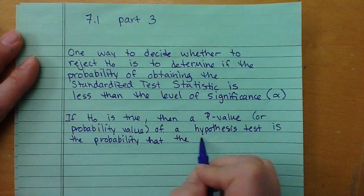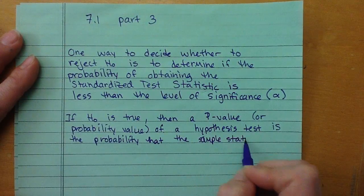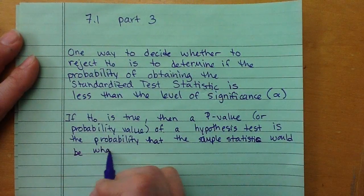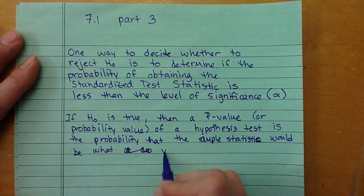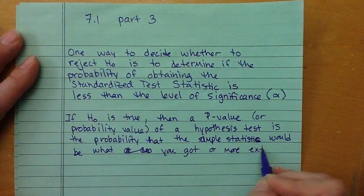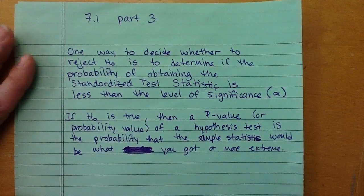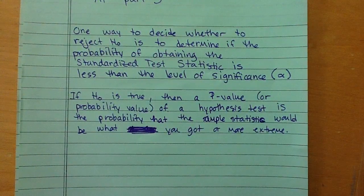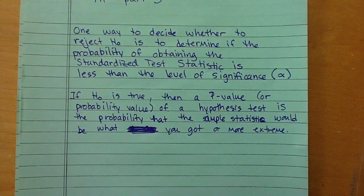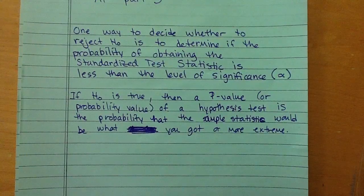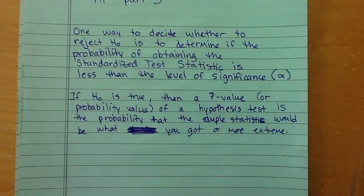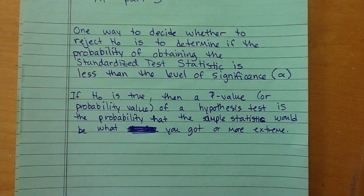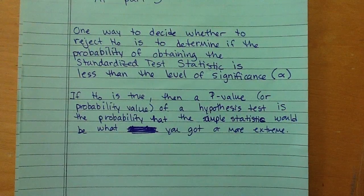So if the probability that we would get 47 miles per gallon is less than or equal to our level of significance — say the probability was 0.0013, or 0.13%, and our level of significance is 0.05, which is 5% — then our probability of 0.0013 is smaller, and we would have to reject the null hypothesis.